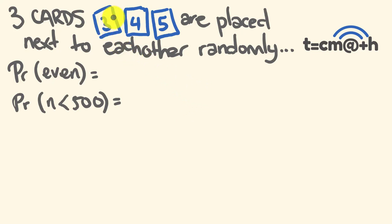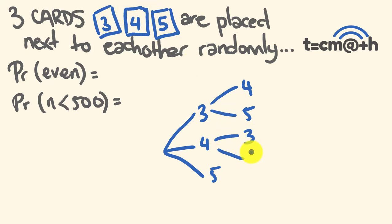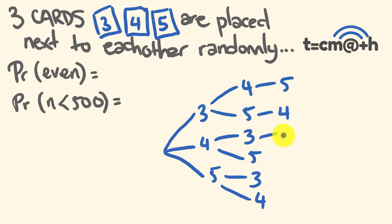There are three different cards that could be drawn first, so our tree has three branches: the first card drawn could be a 3, a 4, or a 5. If you draw a 3 first, the next card could be a 4 or a 5. If you draw a 4 first, the next could be a 3 or a 5. If you draw a 5 first, the next could be a 3 or a 4. For the last card: 3-4 gives 5, 3-5 gives 4, 4-3 gives 5, 4-5 gives 3, 5-3 gives 4, and 5-4 gives 3.